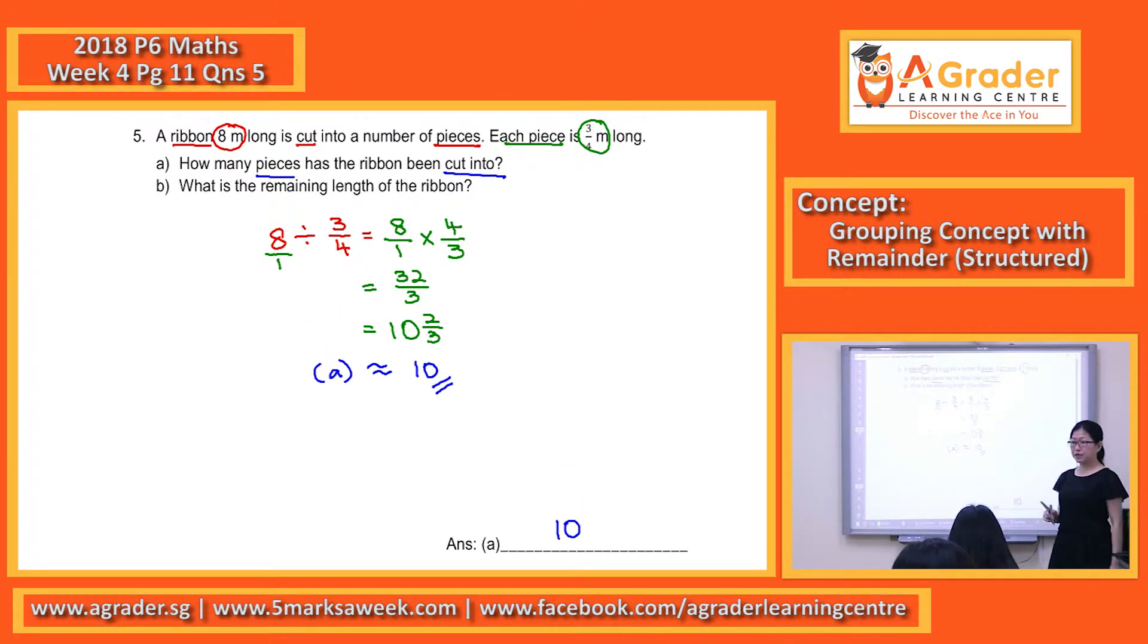For part B, they are asking for the remaining length of the ribbon. We only count the pieces in terms of when they are all at 3 out of 4m. So we cut 3 out of 4, 3 out of 4, 3 out of 4, so there's a balance there which is not the 3 out of 4.